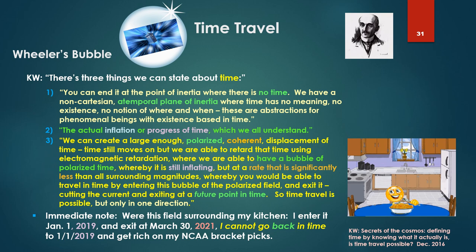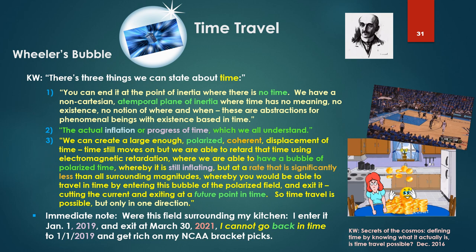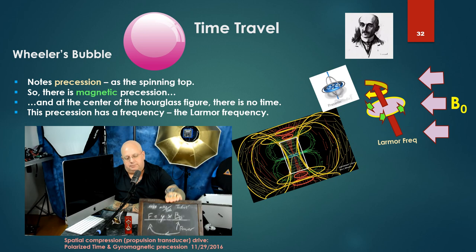So an immediate note here. With this field surrounding my kitchen and I enter it on January 1st, 2019, and exit it at March 30th, 2021, two years later, I cannot go back in time in the conception we're about to explore to January 1st, 2019 and get rich on my NCAA bracket picks for the years 2019, 2020, and 2021. There's simply one direction. One cannot go back, travel back in time. And if I left my wife there, she would have to catch up with me aging two years to catch up with me.